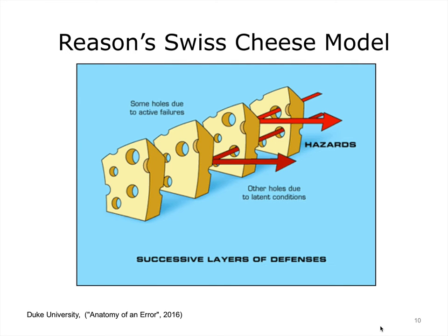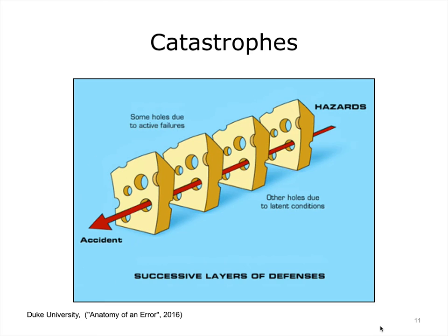James Reason proposed the Swiss cheese model of system failure. Every step in a process has the potential for failure to varying degrees. The ideal system is analogous to a stack of slices of cheese. The holes are opportunities for a process to fail. Each slice is a defensive layer. An error may allow a problem to pass through a hole in one layer, but in the next layer the holes are in different places and the problem should be caught. Each layer is a defense against potential error impacting the outcome. For catastrophic error to occur, the holes need to align for each step in the process, allowing all defenses to be defeated and resulting in an error.